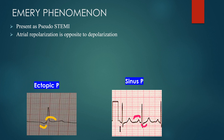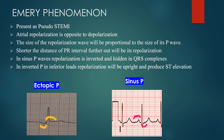The sinus P wave has an upright depolarization, so by these principles its repolarization must be inverted. We cannot see that repolarization because it is hidden within the QRS complexes. A few other points: the size of the repolarization wave is proportional to the size of the P wave, and the shorter the PR interval, the further out the repolarization will shift. So if the PR interval gets shorter, this repolarization wave moves to the right.